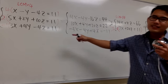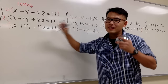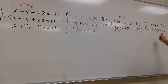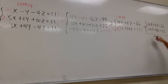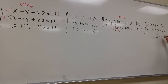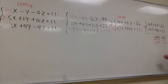Now we combine these two equations. The 14x minus 14x cancel out, and 4z minus 48z is negative 44z, and 66 minus 22 is positive 44. I can now divide both sides by negative 44 — be really careful with the sign. Z is equal to 44 over negative 44, which gives us negative 1.